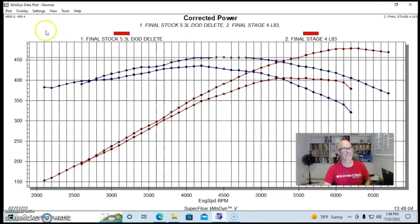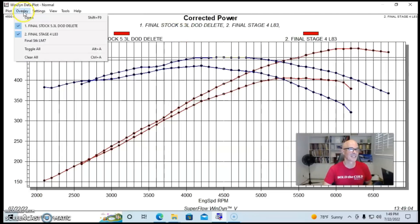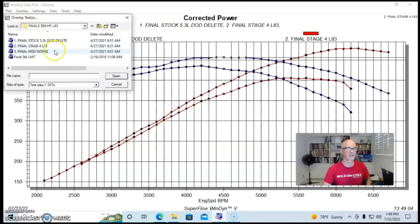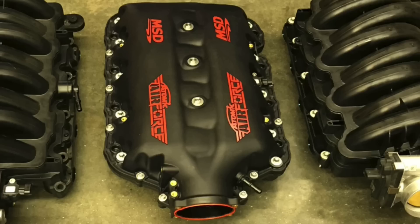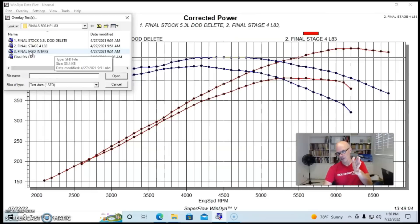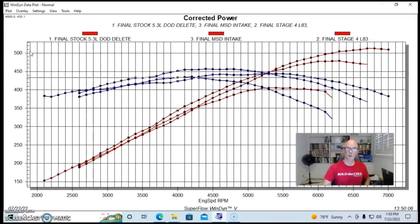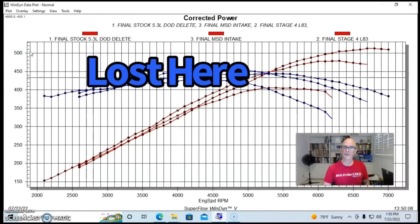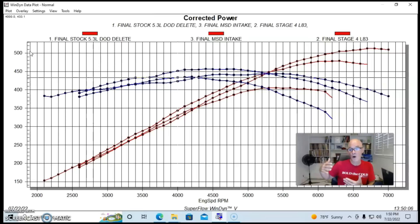But they weren't done there because they wanted to get this thing making some serious power. So what they did was take off the factory long runner intake manifold and put on the MSD intake manifold, actually designed for the L86 and LT1 with its short runners. And naturally with short runners, it did lose power down low compared to the long runner intake manifold. But what they were looking for was a big number, hopefully beyond 500 horsepower. And that's exactly what they got.